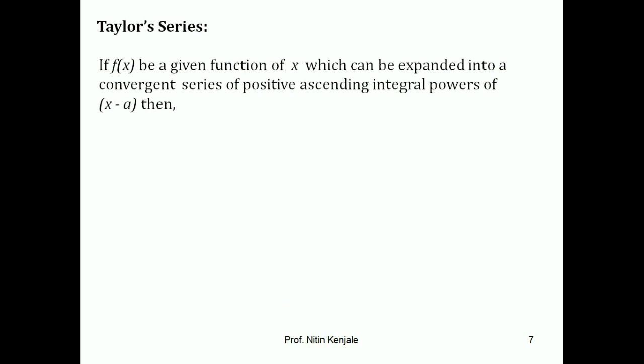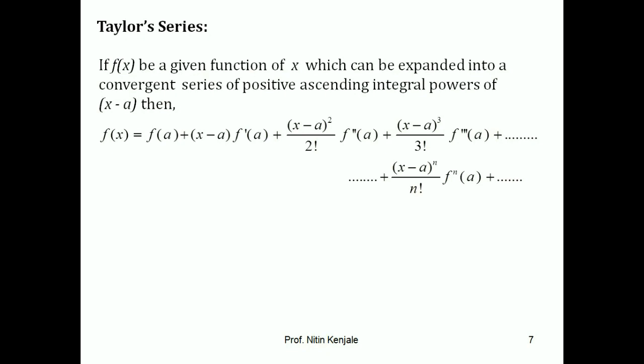If f(x) is a function of x which can be expanded into a convergent series of positive ascending integral powers of (x minus a), then f(x) can be written as f(a) plus (x−a) into f'(a) plus (x−a)² upon 2 factorial into f''(a) plus (x−a)³ upon 3 factorial into f'''(a) and so on. The nth term of this infinite series will be (x−a)^n upon n factorial into f^n(a).